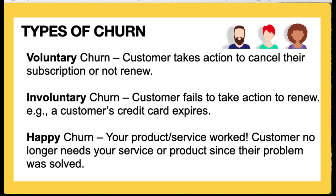We talked about churn in terms of both numbers and revenue. What types of churn exist? There are three main types. Voluntary churn: a customer takes action to cancel their subscription or not renew — they do not want to be your customer anymore. Involuntary churn: they fail to take action to renew — maybe they're not checking the email address used for their account, or their credit card expired. And happy churn: your product or service worked, and customers no longer need it since their problem was solved — good for you, but you won't get any more money from that customer.